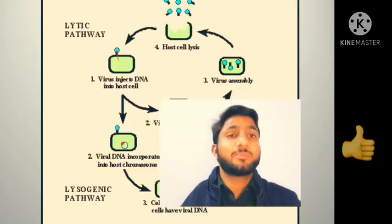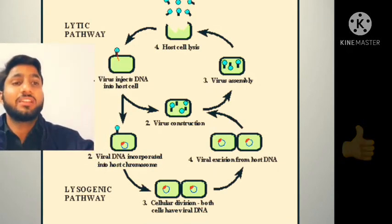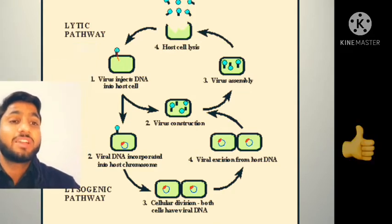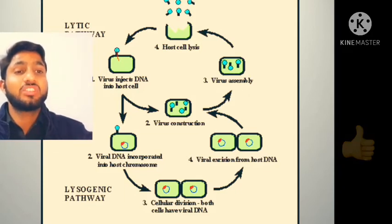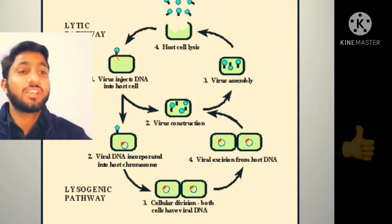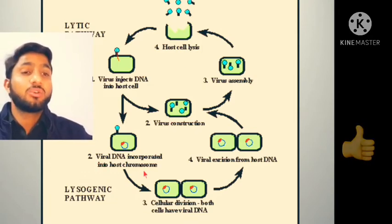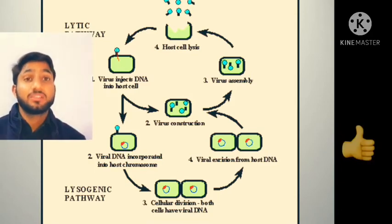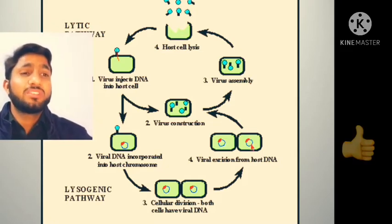Looking at the diagram: in the lytic life cycle, the first step is the virus injecting DNA into the host cell. Second step, the viral DNA is incorporated into the host chromosome. Third step is cellular division — after the bacteria divide, the DNA divides along with it, and then viral excision from the host cell occurs.